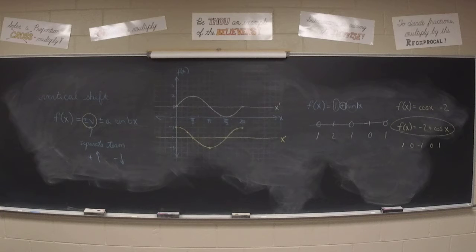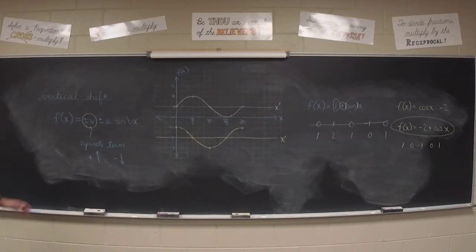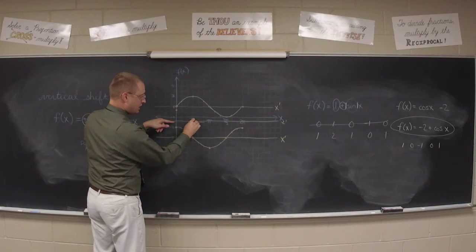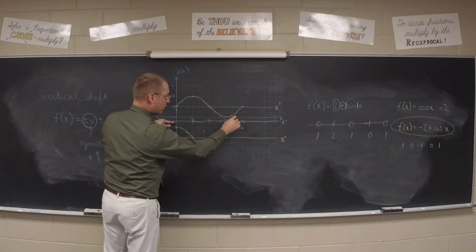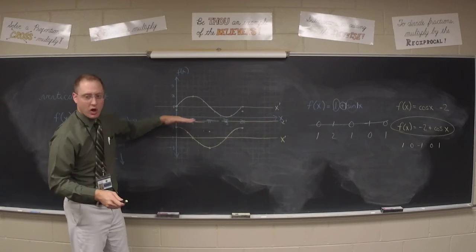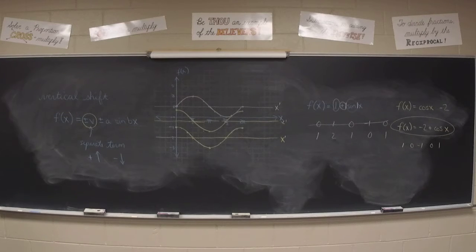Number 16: down 2. Number 17: up 3. Number 18: down 2. Number 19: 0 — no shift at all, good catch. Number 20: no shift there either, because that's not a separate term — it's being multiplied. Number 21: down a third. That would be obnoxious but think about it — if you put an x-prime axis a third of the way down, you go up 1, 0, negative 1, 0, 1 relative to it. With the translated axis, you're not dealing with a whole bunch of fractions.